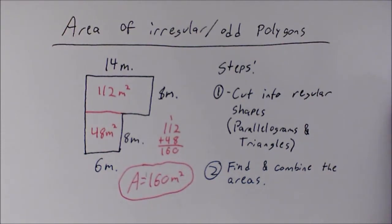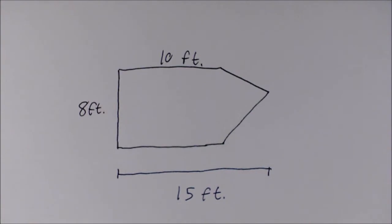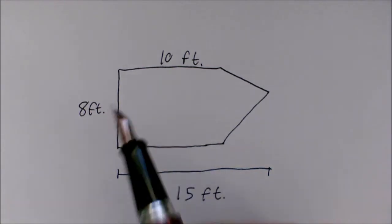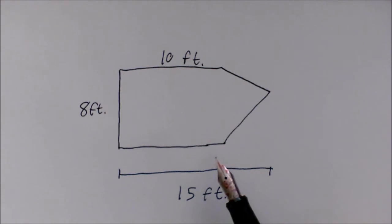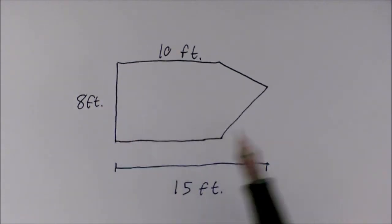For irregular polygons, there is not too much more than this. Let's try one more example. For this example, we don't have quite enough information to immediately find the area of any shape that we can cut. For example, you could draw a horizontal line straight across to form two trapezoids, but the trapezoids are incomplete and we would still need a bit more information.